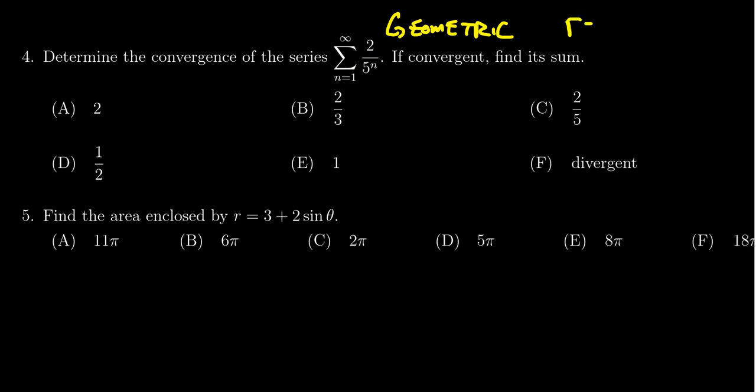The convergence of a geometric series comes down to its common ratio. The common ratio here is going to be one fifth. And you'll notice that the absolute value of the ratio, which is one fifth, is strictly less than one. So it is convergent. That means F is not the correct answer.